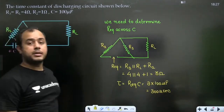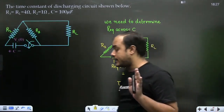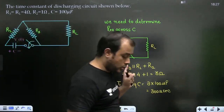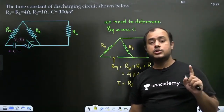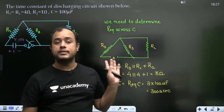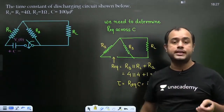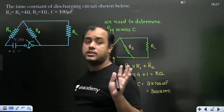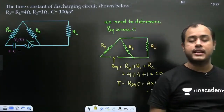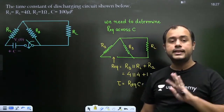Transient ke andar sabse pehli cheez yeh pata honi chahiye — kaise initial aur final condition nikalte hain, jo aapne first two lectures mein dekha. Teesri cheez jo aani chahiye, that is the time constant. Agar yeh teen parameter — initial state, final state, aur time constant — kabhi bhi nikal liye, to main keh raha hoon transient ke 90% questions aap baithe baithe crack kar doge. Focus clear rakho: network dikhe, initial state, final state, tau — yeh teen cheezein aayi, khel khatam.